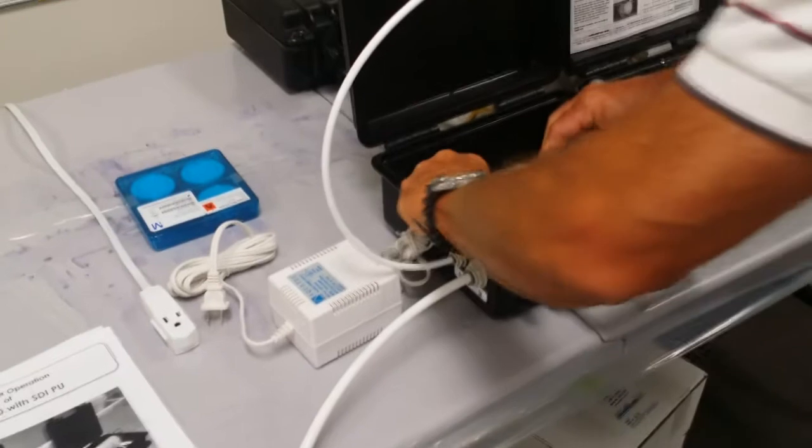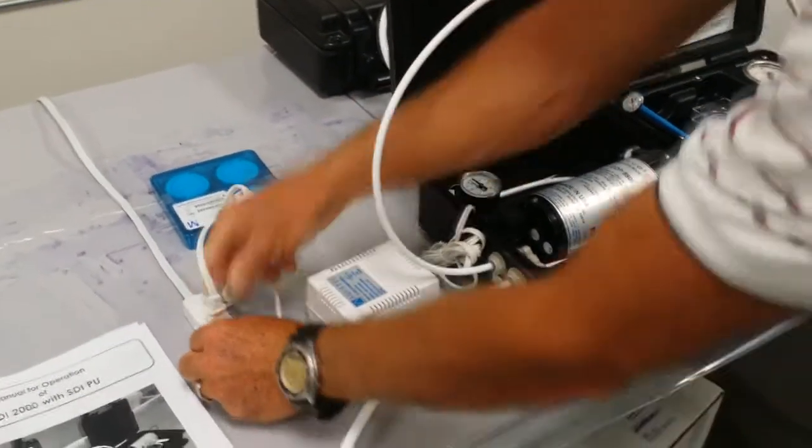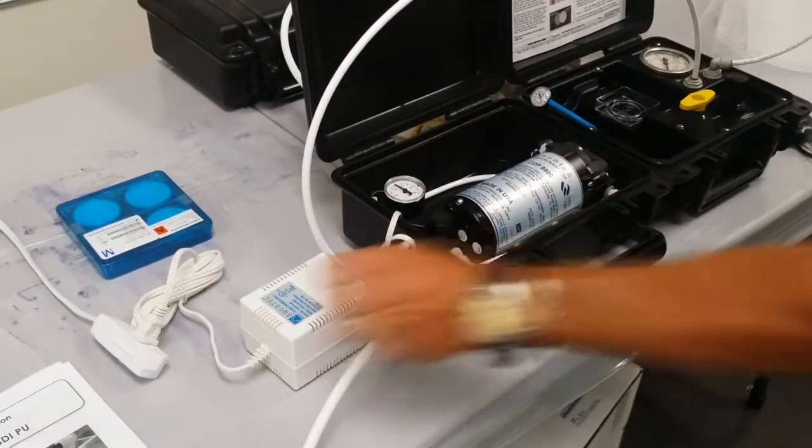First thing we want to do is turn it on, which in this case there's no switch. We turn the pressure on by plugging it in.